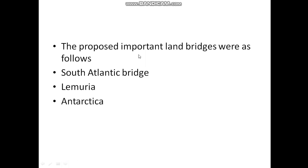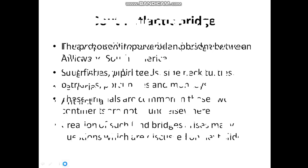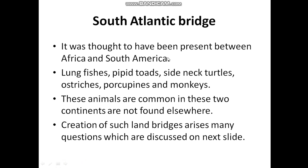The proposed important land bridges are: the South Atlantic Bridge, Lemuria, and Antarctica. For the South Atlantic Bridge, Africa and South America are the two continents involved. The animals common to both continents include lungfishes, piped toads, side-necked turtles, ostriches, porcupines, and monkeys. These animals are found in both continents and not found elsewhere.